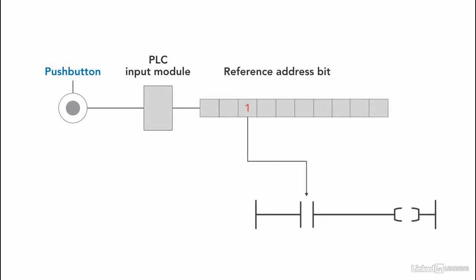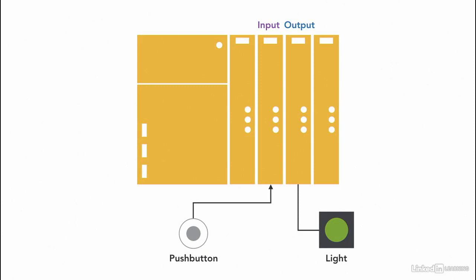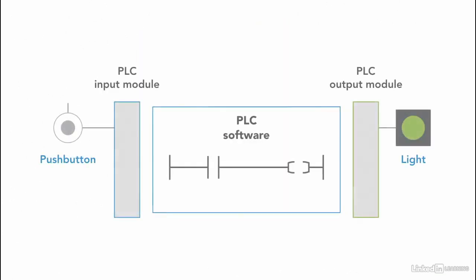The input device provides the input module with the status of the device — for example, if it's on or off — and using this memory location within the program reflects the change. The same thing applies for an output device, where the specific memory location within the output module reflects any changes accordingly. So the push button is connected to the PLC input module, and the light is connected to the output module of the PLC.